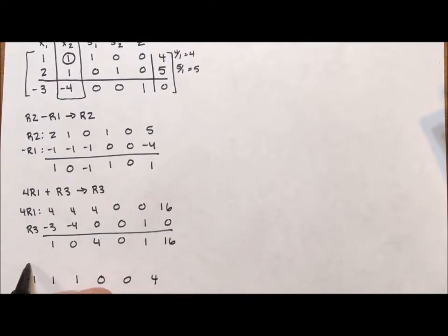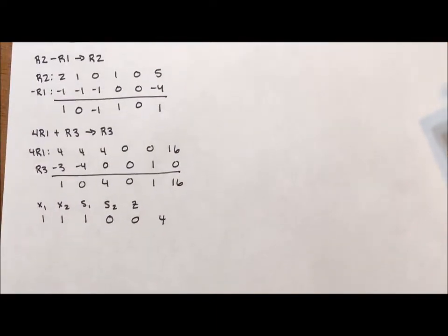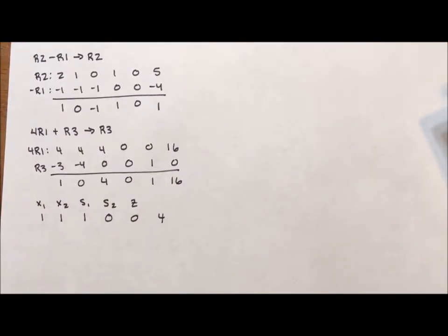I'll even give my labels. X sub 1, X sub 2, S sub 1, S sub 2, and Z. Then I'm going to replace row 2 with what I got for row 2 right here. 1, 0, negative 1, 1, 0, 1. And I'll replace row 3 with what I got here. 1, 0, 4, 0, 1, 16.